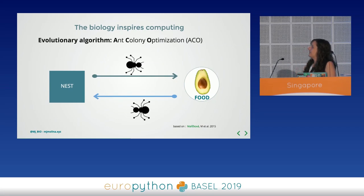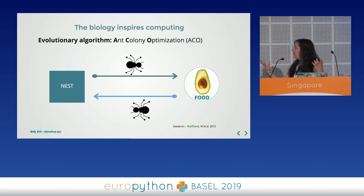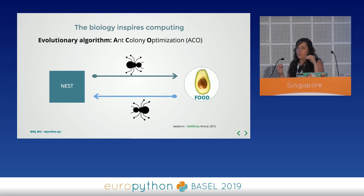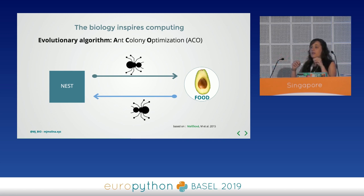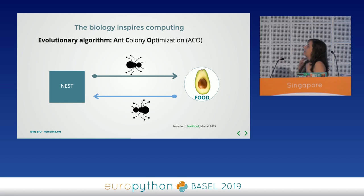One example — and there are many — is the evolutionary allegory. Specifically, one example I love is ant colony optimization. It is based on ants: ants can go from their nest to food because they use pheromones and can communicate with one another using pheromone communication. When they have some trouble in the way — a rock or something — they can tell each other the easiest or shortest route. This is a kind of optimization process, and it is the base of this algorithm.